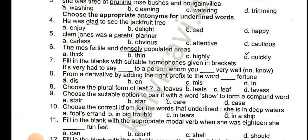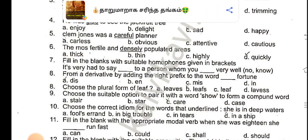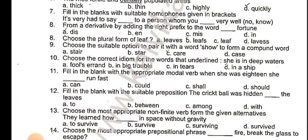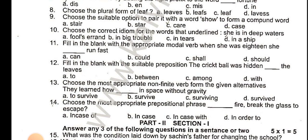The next items include: forming a derivative by adding the right prefix to the word 'fortune,' choosing the plural form of 'leaf,' selecting the suitable option to find the compound word for 'show,' choosing the correct idiom for underlined words — 'she is in deep waters' — filling in the blank with the appropriate modal verb, and filling in the blank with the suitable preposition: 'the cricket ball was hidden in the leaves.'